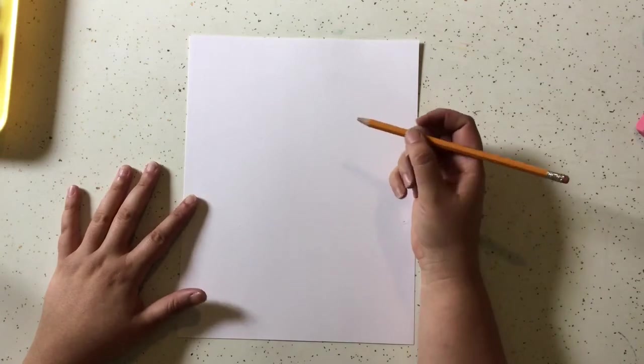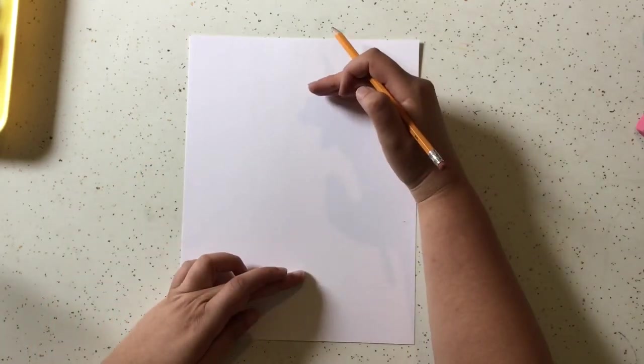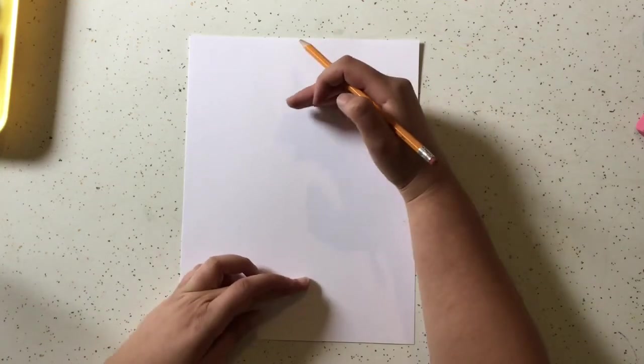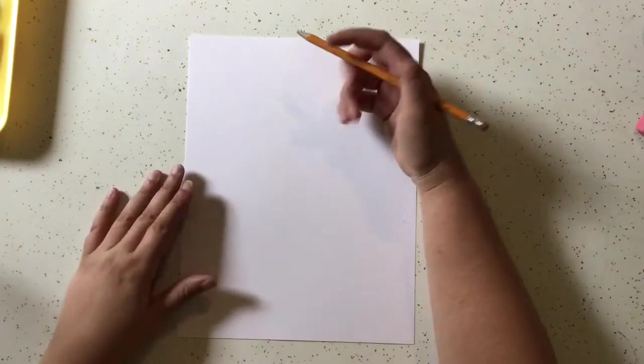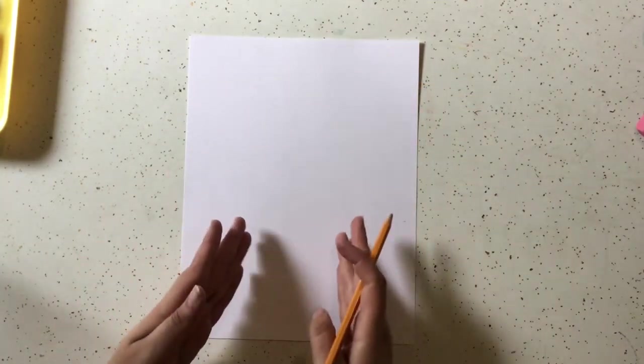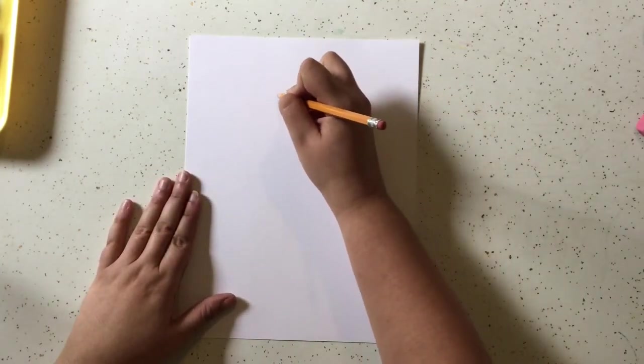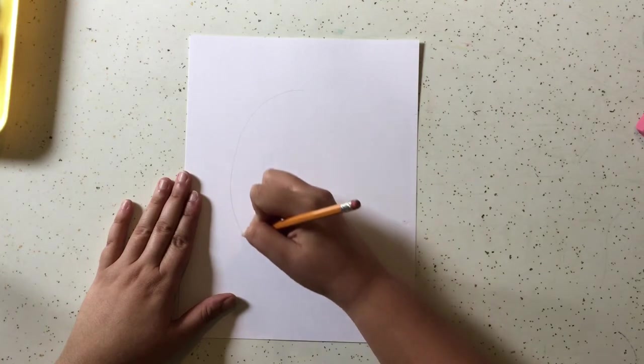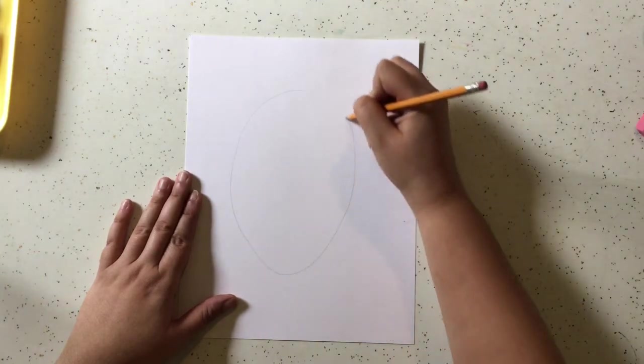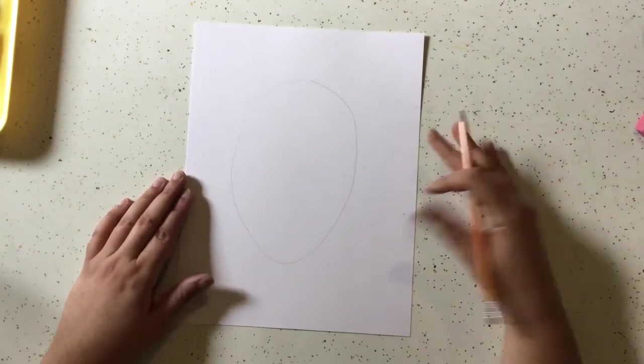So first things first, you just need to get you kind of an oval shape for the face. About this big will work. You might want to make the bottom part of the oval a little bit thinner to give you kind of a chin, but everyone's face is different, so you don't have to do that. Something like that.